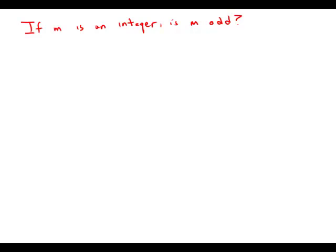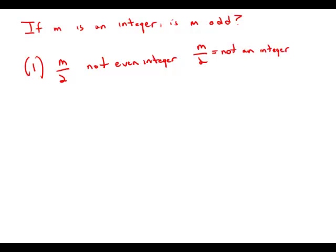If m is an integer, is m odd? A very straightforward prompt. Statement 1 tells us that m over two is not an even integer. That means one of two things could be happening: m over two could just be not an integer at all — just a fraction — or m over two could equal an odd number.